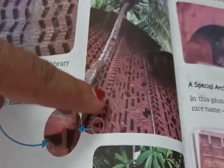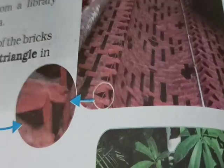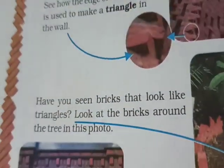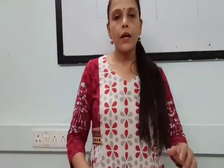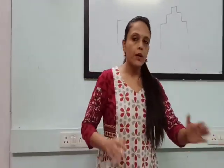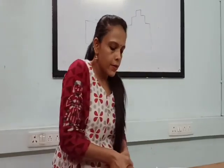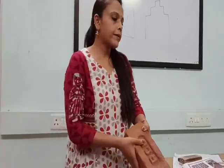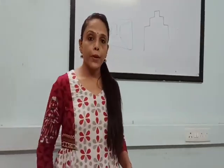That library in Kerala has walls built with such a beautiful pattern — you can see triangles and jali patterns combined. Have you seen bricks that look like triangles? Look at the bricks arranged around trees in a garden; the bricks are dug into the soil so only the triangle part is visible. By that way also we can form different brick patterns.